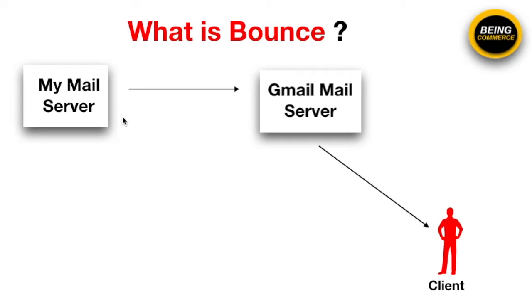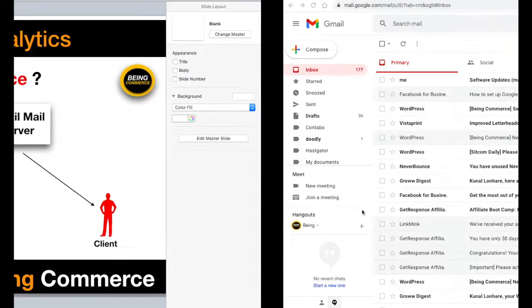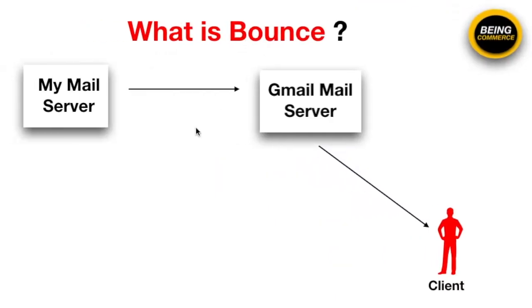For example, I have my own mail server and I want to send an email to my client who uses Gmail. My message will first go to the Gmail mail server, which will verify my email — checking whether my email address is blacklisted or not. After verification, it will then send my email to my client. So: my mail server sends to Gmail mail server, Gmail verifies, and only if everything is alright will the message reach my client's Gmail inbox.